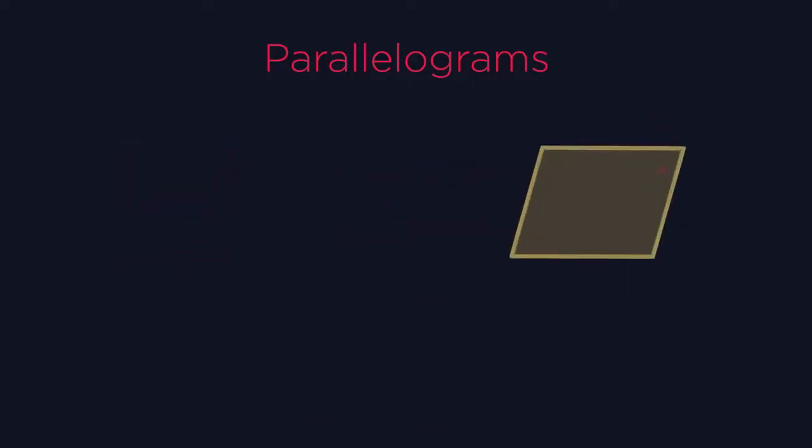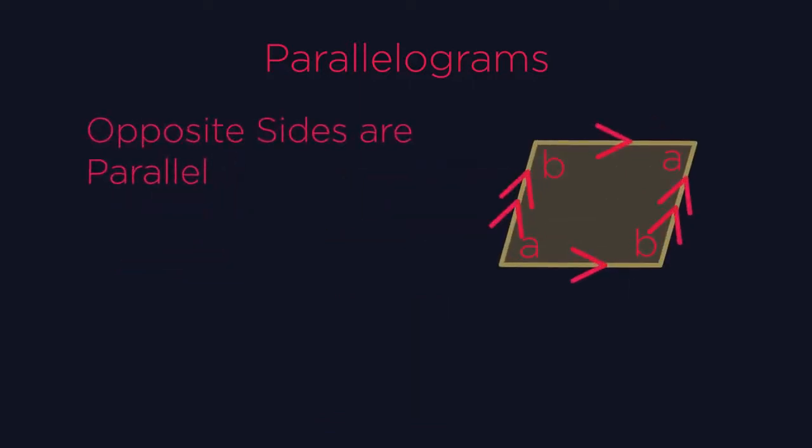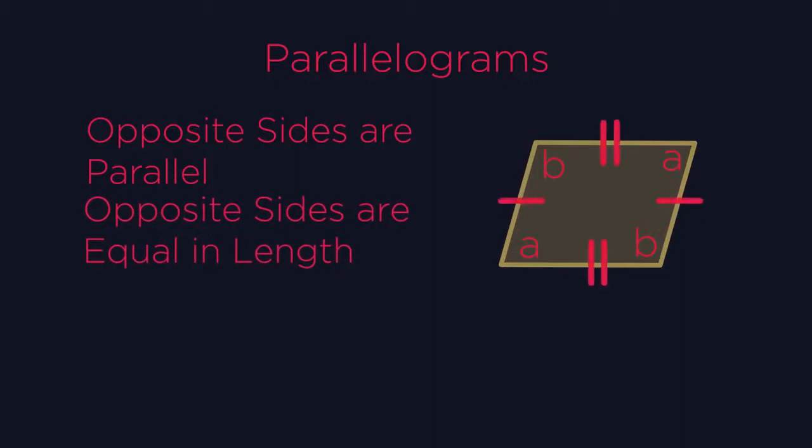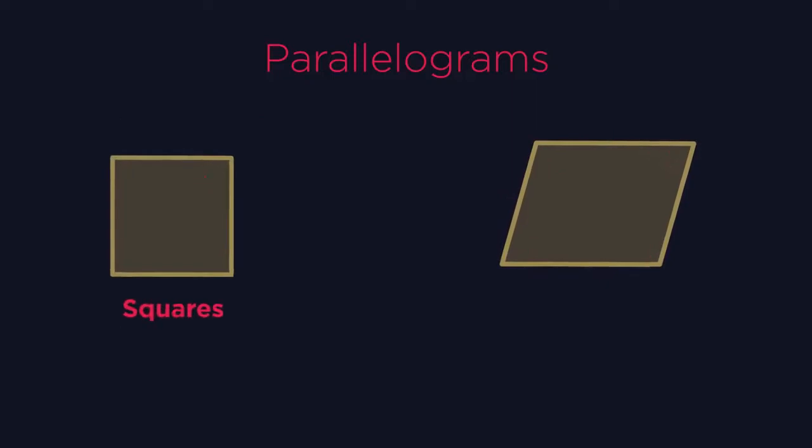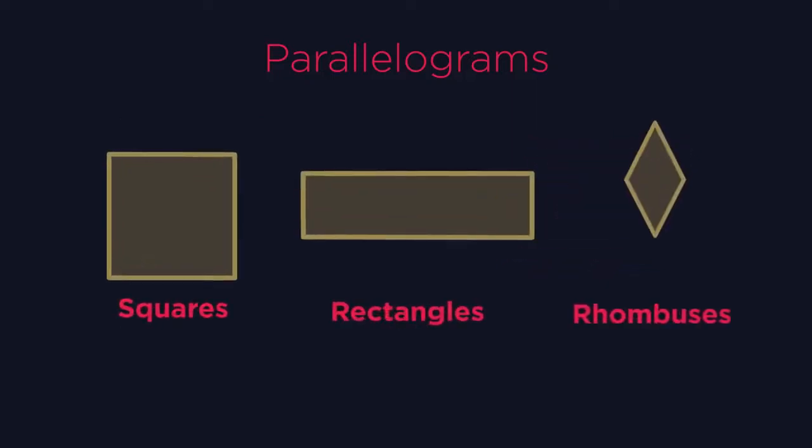They have parallel opposite sides that are equal in length. So these and these. The opposite angles are also equal like in rhombuses. Squares, rectangles and rhombuses all meet these requirements. Hence they're parallelograms.